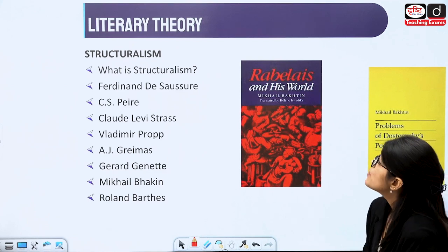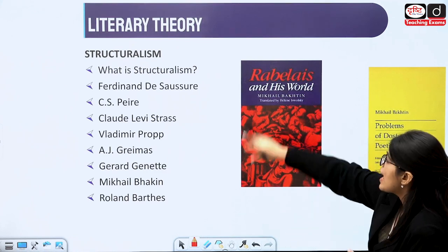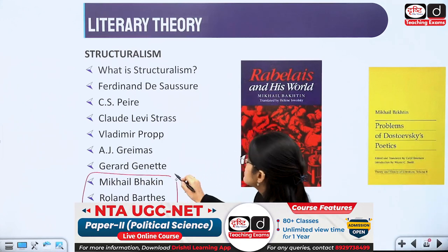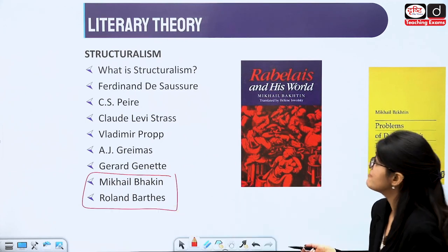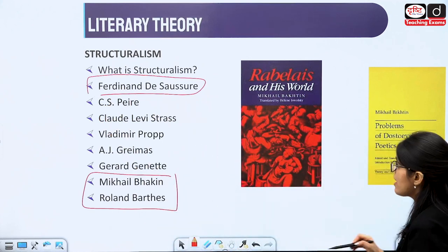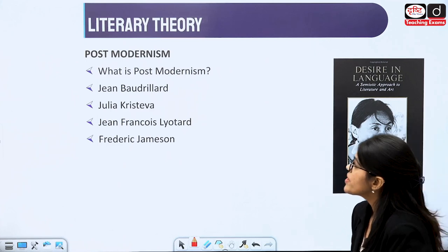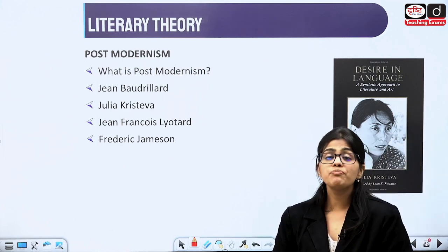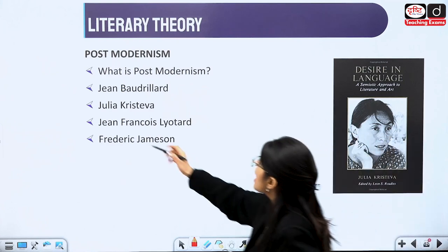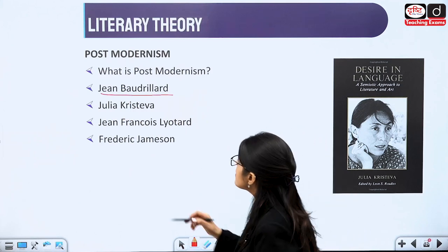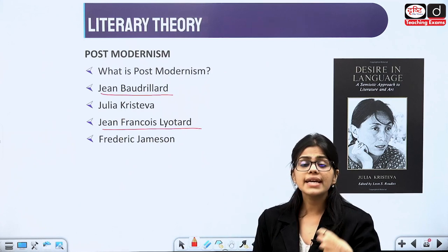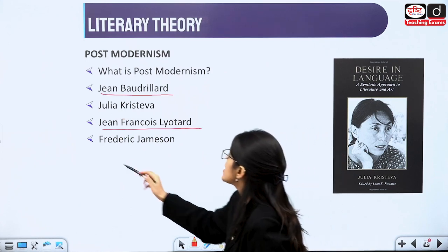We will study Structuralism and writers related to it — Roland Barthes, Mikhail Bakhtin being the most important. Ferdinand de Saussure: the sign, the signifier — these are key concepts. Then we have postmodern writers, from whom direct questions come: Jean Baudrillard, Julia Kristeva, Lyotard — who talked about grand narratives and petit narratives — and Fredric Jameson. Then we have Reader Response Theory: Wolfgang Iser and Stanley Fish — two very important writers who talked about reader response theory, the relationship between text and reader.